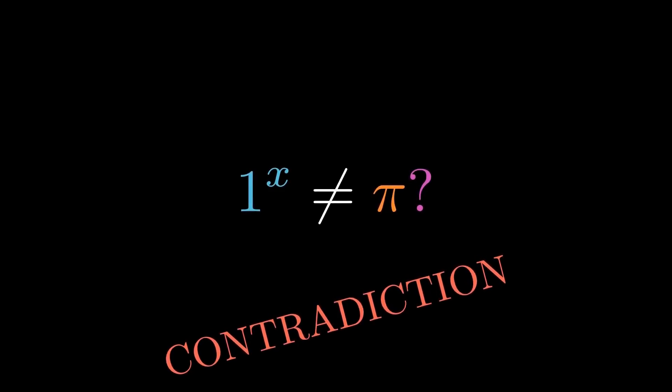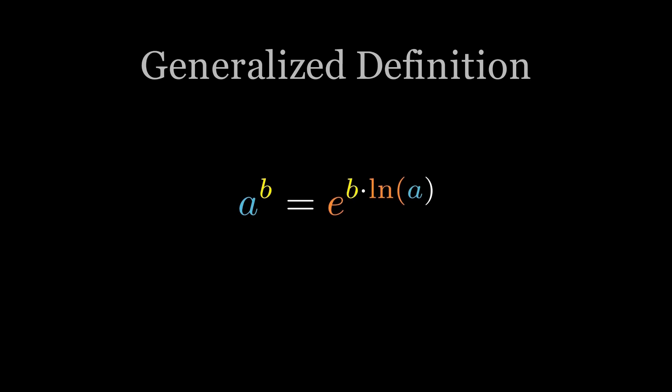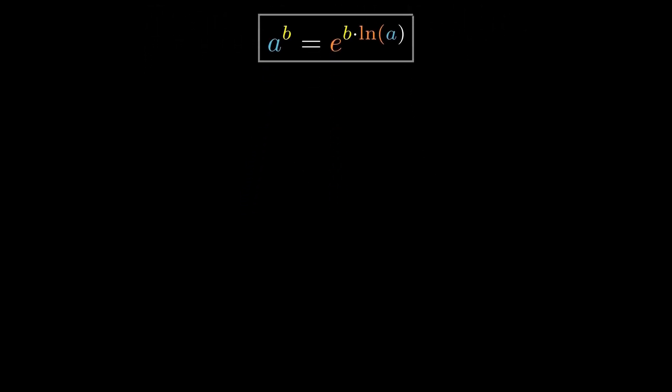So the only escape is this, our hidden assumption is wrong. Let's explore the real definition of complex powers. In complex math, we rewrite powers like this, a to the b equals e to the b times log of a. Now apply it to our claim, 1 to the x equals π, that becomes e to the x times log of 1 equals π.